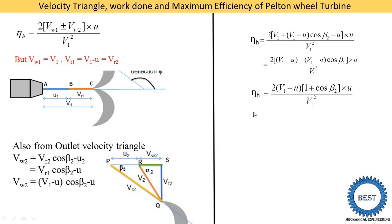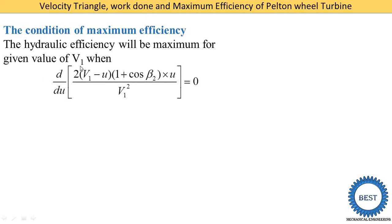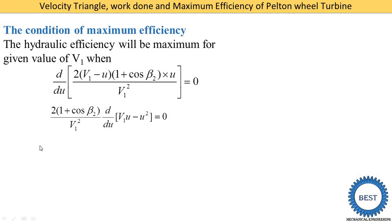Next, we derive maximum efficiency for a Pelton wheel turbine. To find the condition for maximum efficiency, we differentiate the hydraulic efficiency equation with respect to U. The constant term (1 plus cos(beta2)) / V1² is taken outside the differential. We only differentiate (V1 minus U)*U, which expands to V1*U minus U².